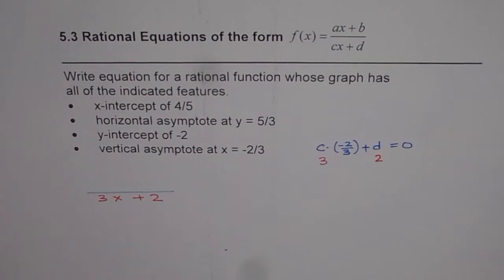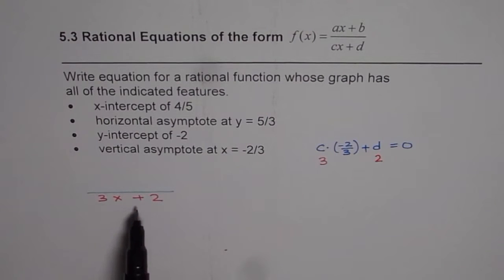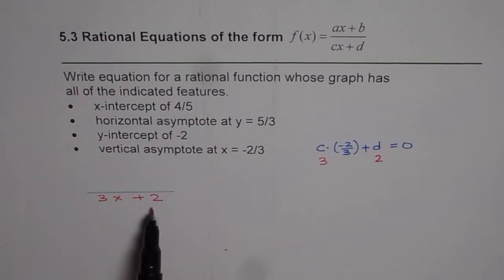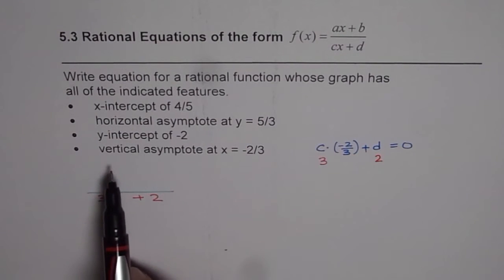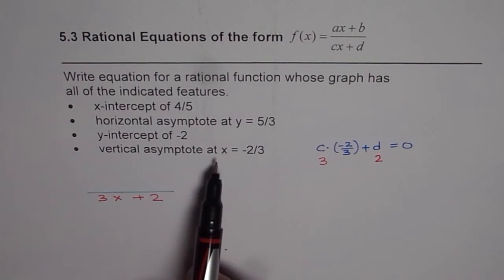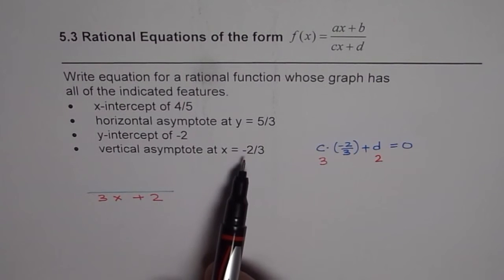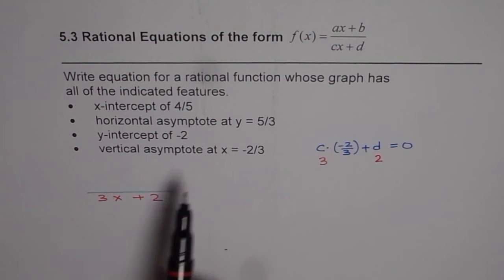What we see here is that the equation with 3x + 2 in the denominator satisfies the vertical asymptote x = −2/3.